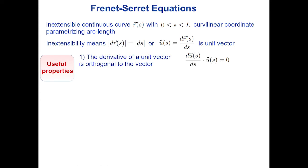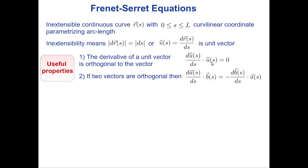Two useful properties of unit vectors: first, the derivative of a unit vector is orthogonal to the vector itself — differentiating the scalar product with the vector gives zero. Second, if two vectors a and b are orthogonal for all s, then the derivative of the first dotted with the second equals minus the derivative of the second dotted with the first.